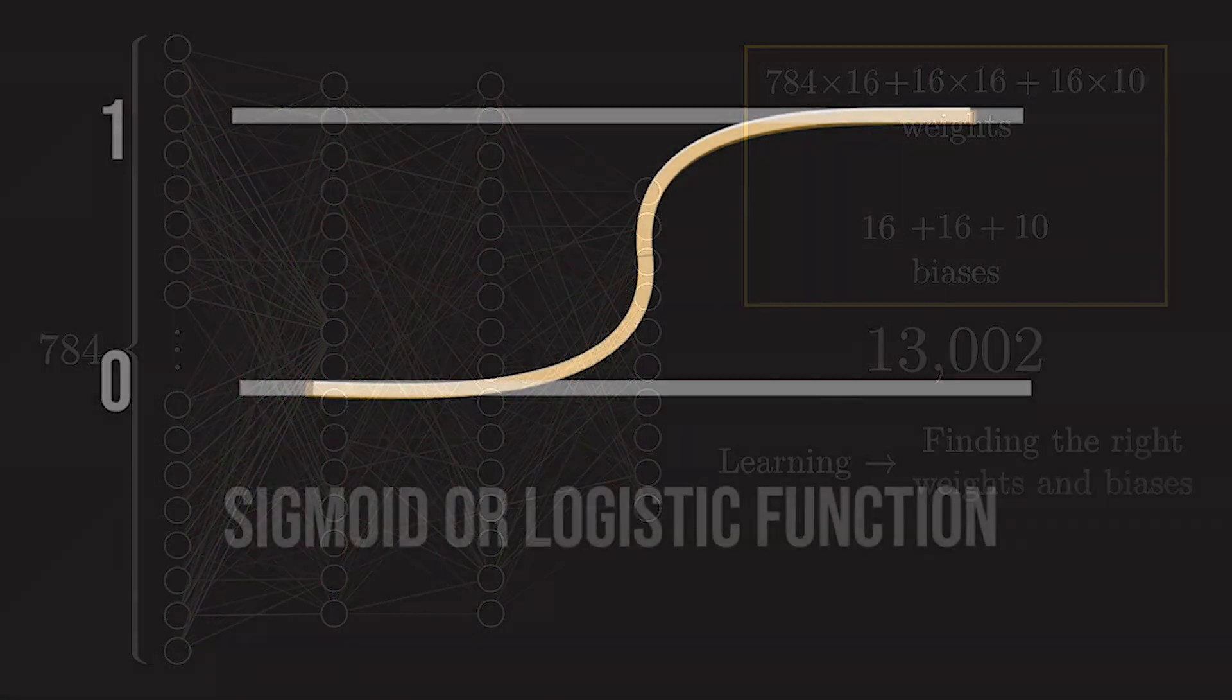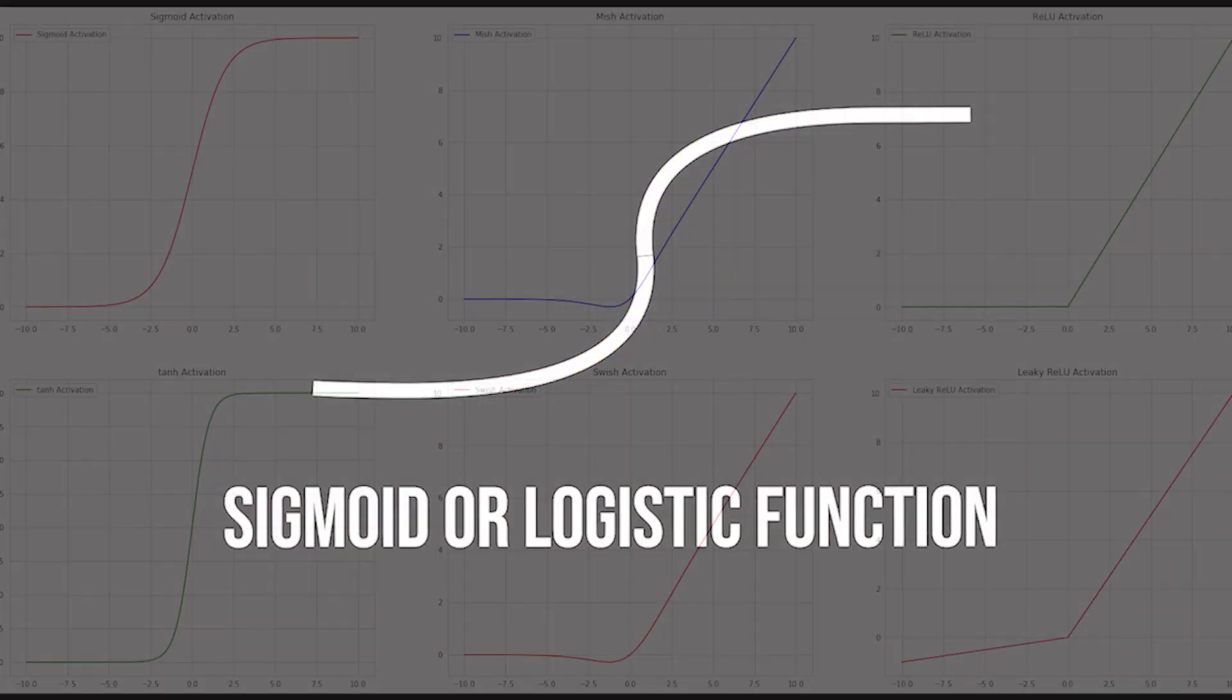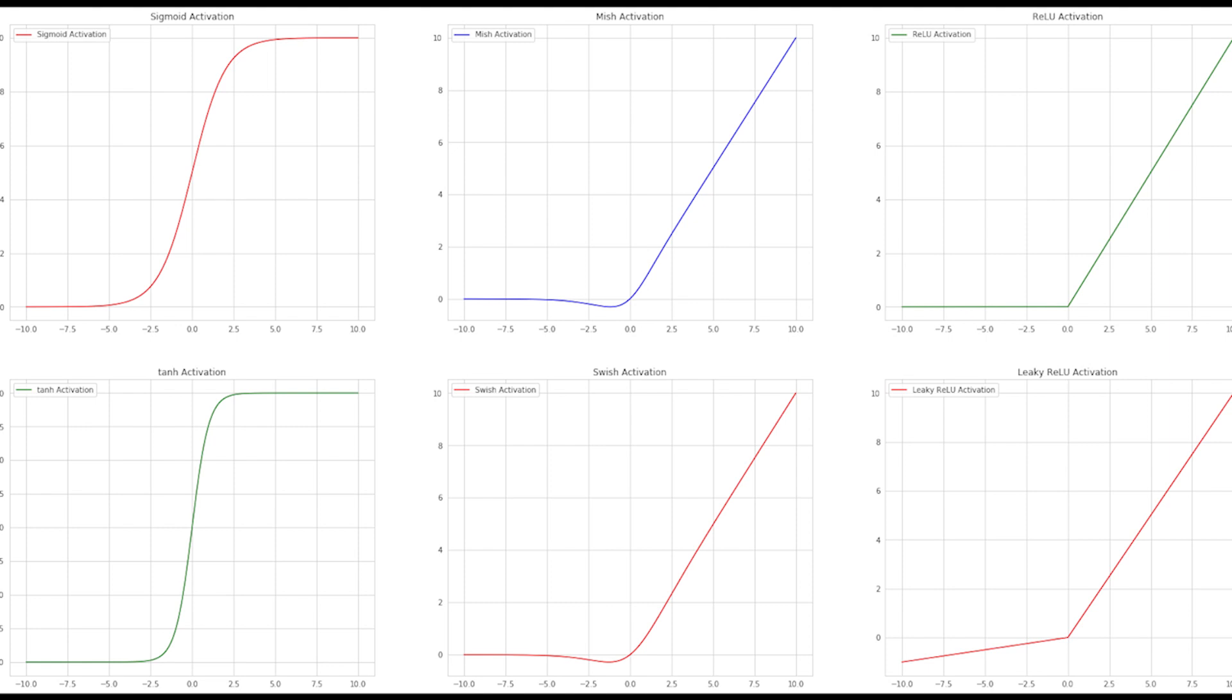In our case, the logistic regression units use sigmoid activation functions. However, there are many other options. Right now, variants of ReLU are in fashion.